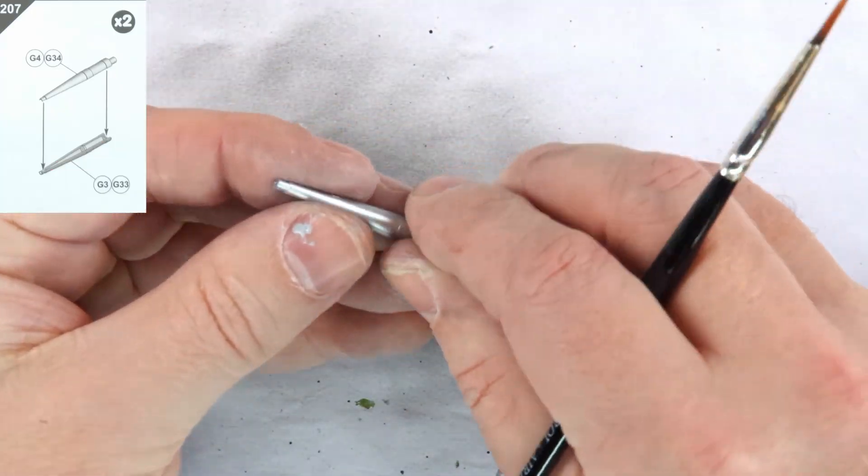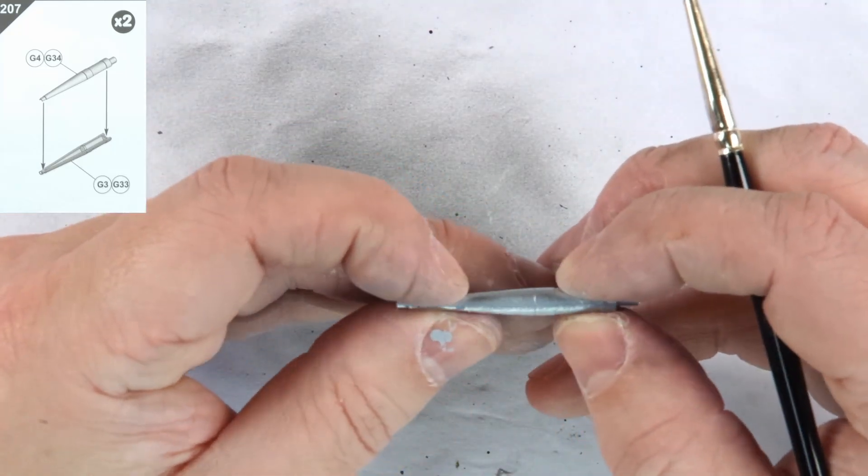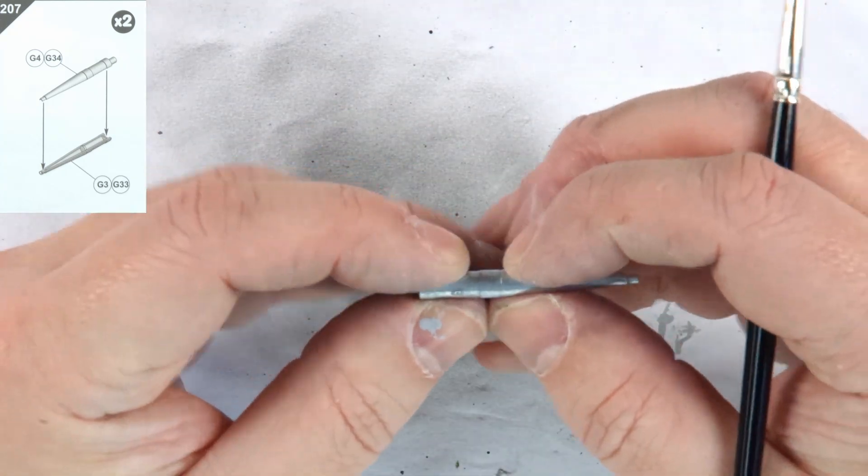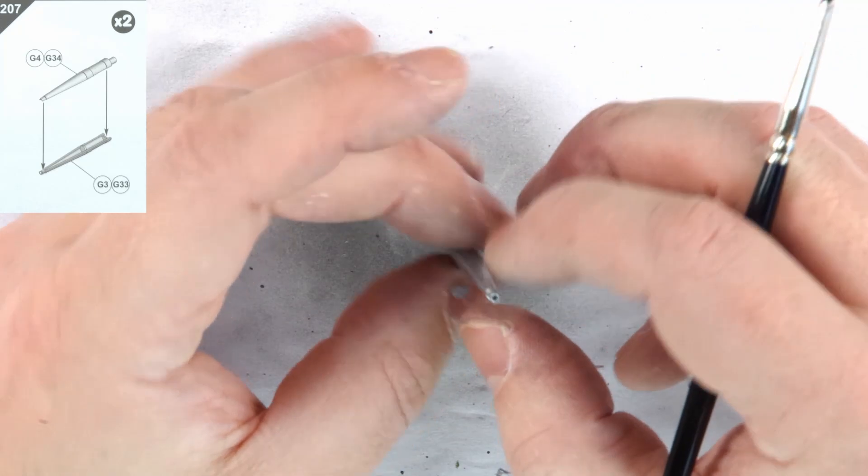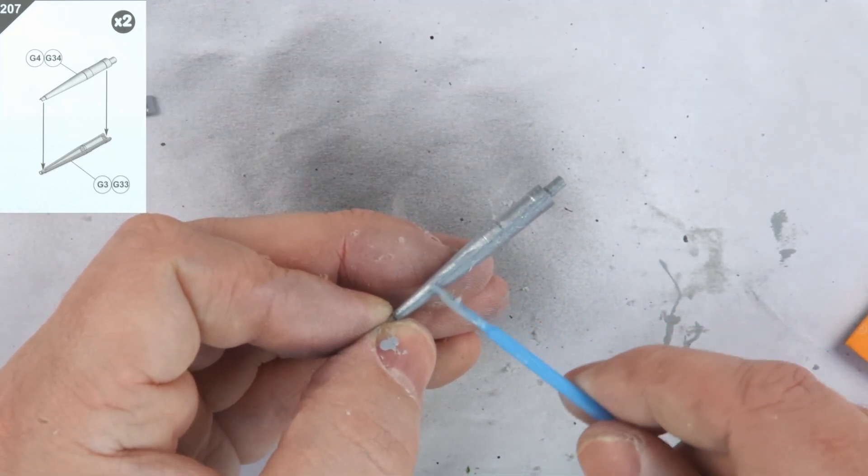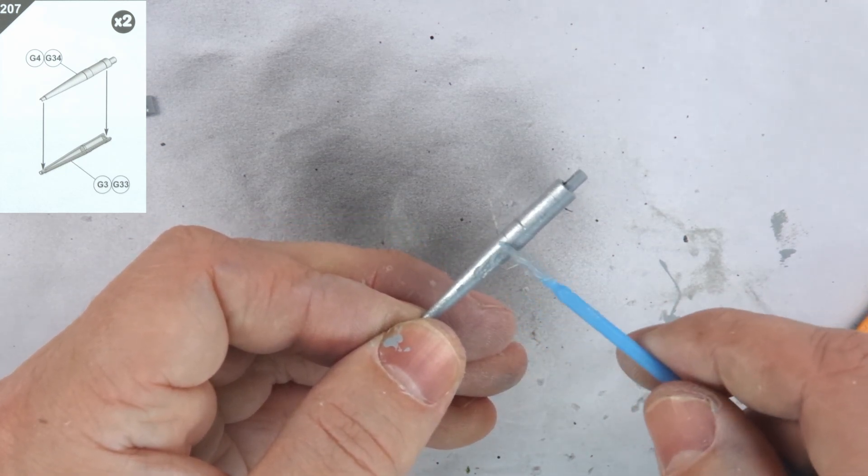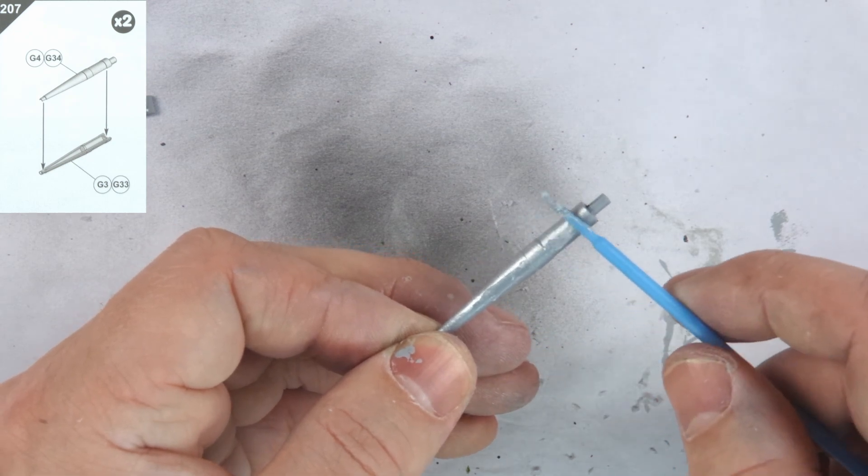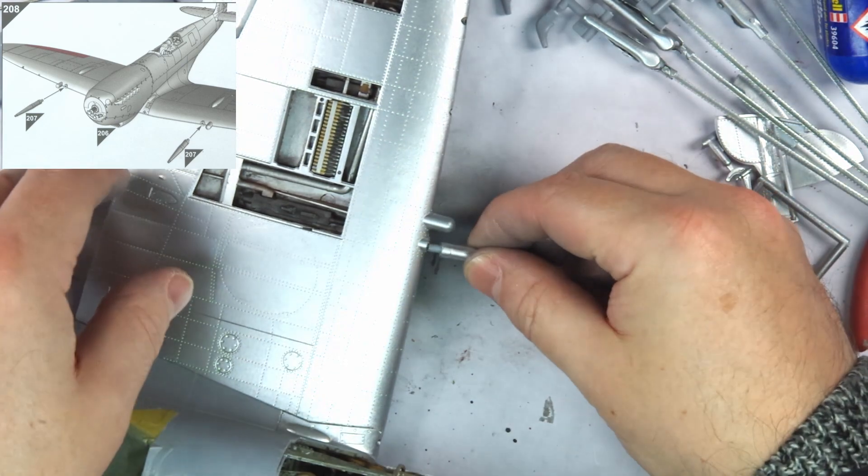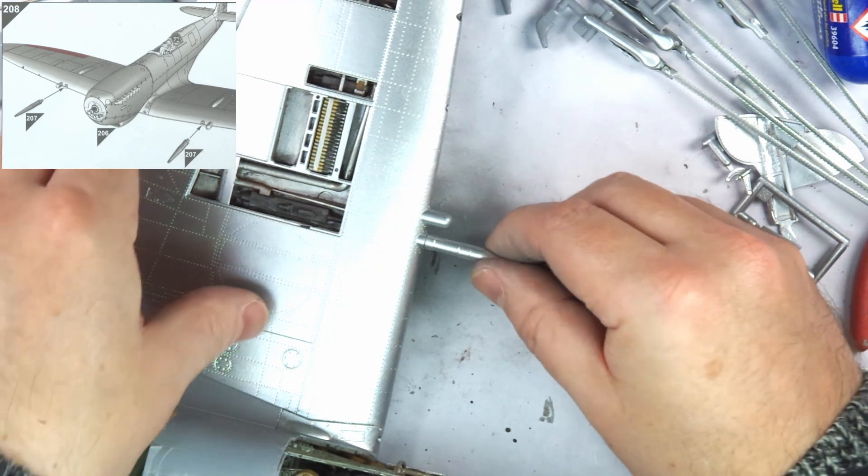Step 207 has us construct the two-piece Hispano cannon covers. These go together nicely, but the seams are not invisible. That means we need a little sprue goo and sanding to complete them. Once complete and dry, they fit into the wings perfectly, having a small slot to ensure they install in the correct orientation and sit correctly.